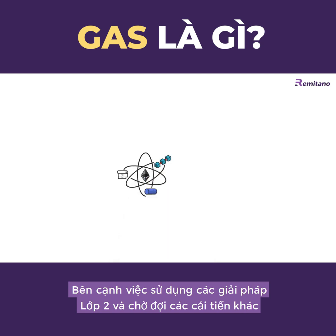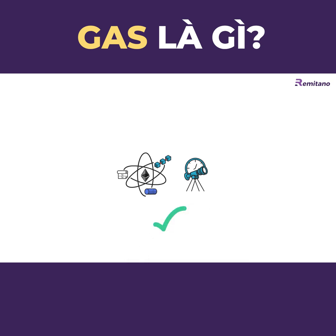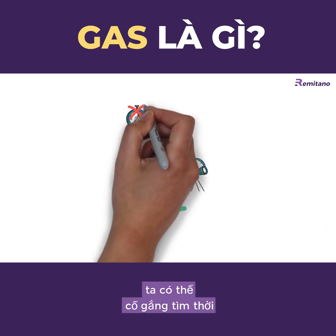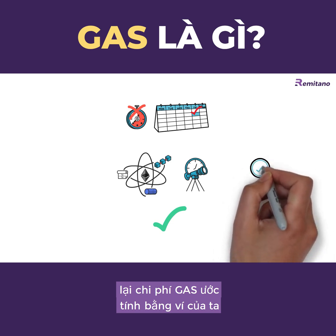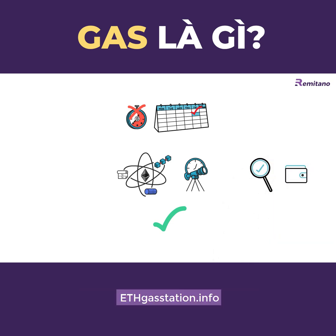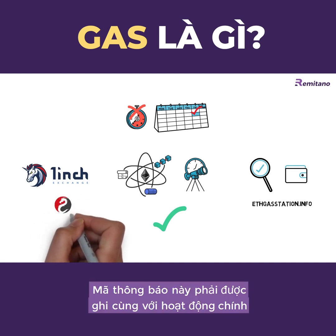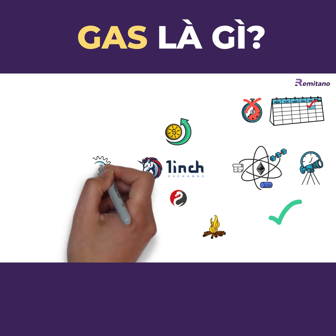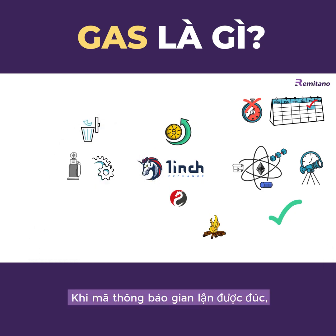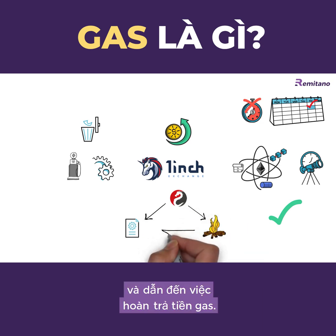Besides Layer 2 solutions and waiting for future improvements, there are a few tricks to lower transaction costs on Layer 1. If you don't have urgent transactions, try to find times of day when gas prices are lowest. You should also double-check the gas cost estimated by your wallet against a reliable source such as ethgasstation.info. Another trick used by 1inch exchange involves Chi tokens — burning them alongside a primary operation leverages an EVM mechanism that refunds gas when storage space is freed, reducing total gas spent.